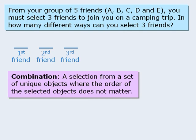So in this example, we have a set of 5 unique friends, and we want to select 3 of them to come camping. Most importantly, the order in which we select the 3 friends does not matter. For example, selecting person A, then B, then C, is the same as selecting person C, then A, then B.